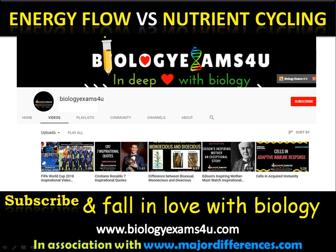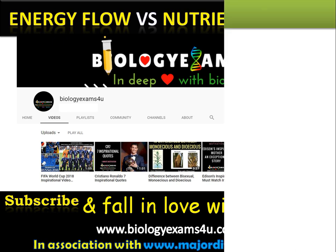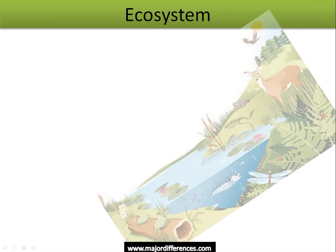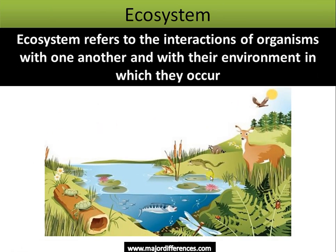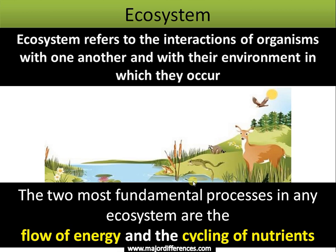Hi friends, once again back to Biology Exams4U.com. Today we are going to discuss the difference between energy flow and nutrient cycling in an ecosystem. Starting with the definition of ecosystem: an ecosystem refers to the interaction of organisms with one another and with their environment in which they occur.